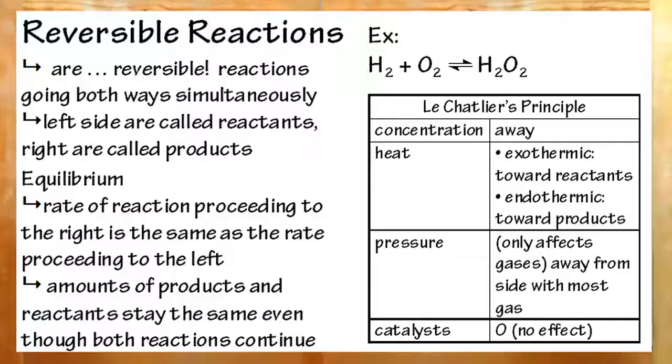To recap, reversible reactions are reactions that can occur both ways. They're reversible. They'll have this cool double arrow thing. Equilibrium is a state that those reactions will reach eventually. That's when the forward rate is the same as the reverse rate. But the amounts of your products and reactants remain constant.